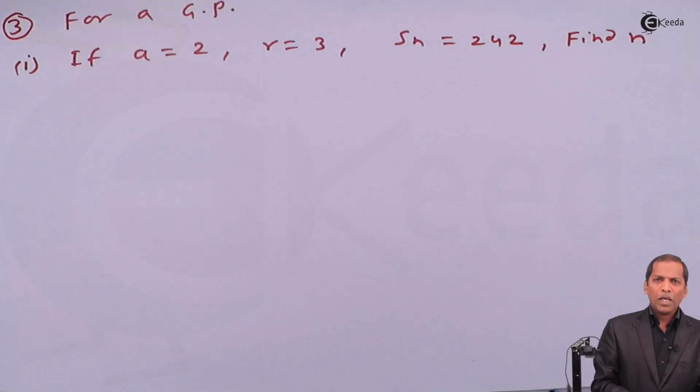Hello friends, now we see question number 3 sub question 1, which is based on the sum of first n terms of a GP of chapter sequence and series.